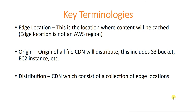The next key terminology is origin. Origin basically means where the file originated from — it can be an S3 bucket, an EC2 instance, an elastic load balancer, and so on. For example, if I've created an S3 bucket located in India and I upload a file to that S3 bucket, that is the origin. Say I have an edge location in Australia; when a user tries to get data from the origin for the first time, it fetches from that S3 bucket in India and caches it at the edge location in Australia. So S3 is the origin of the file.